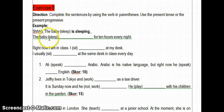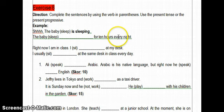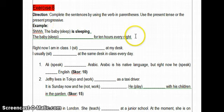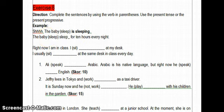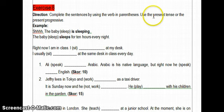Next sentence: 'The baby (sleep) for 10 hours every night.' There's the phrase 'every night,' which signals a habit or routine. So this uses present tense. The subject 'the baby' is singular — equivalent to he or she — so the verb 'sleep' gets the suffix S added: 'the baby sleeps.' That's why there's no 'is' — because it follows the present tense pattern for habits.